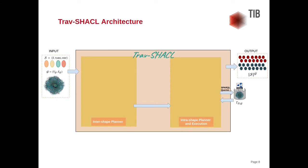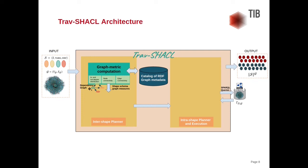Draft SHACL efficiently evaluates the SHACL network over an RDF knowledge graph accessible via a SPARQL endpoint. It is a two-fold approach. The InterShape Planner finds the serial order of the shapes in the SHACL network. It creates different graph-based measures over the SHACL network, like the in- and out-degree distribution. Additionally, a dependency graph is generated from the shapes and their relationships. Based on these measures, a seed shape is selected — the shape that will be evaluated first. Given the dependency graph and the seed shape, the traversal order is generated following either BFS or DFS, ignoring the direction of the edges in the dependency graph.